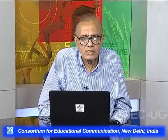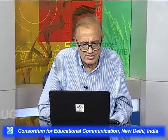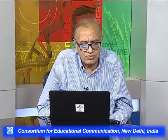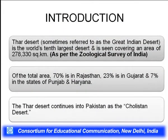The great Indian desert is known as the Thar Desert. It is the world's 10th largest desert, covering a large area of 278,330 square kilometers. Of the total area, 70 percent is in Rajasthan, 23 percent in Gujarat, and 7 percent in the states of Punjab and Haryana. The Thar Desert also extends into Pakistan. Regarding mitigation initiatives, two important ones are the Club de Sahel and the Plan of Action to Combat Desertification; the Sahelian desert has historically had the largest drought-affected population.